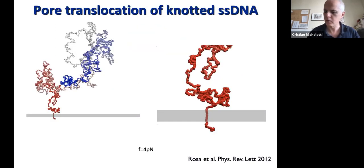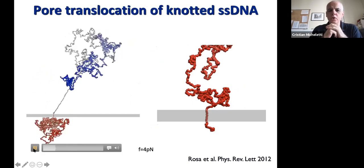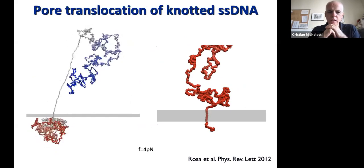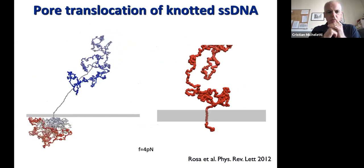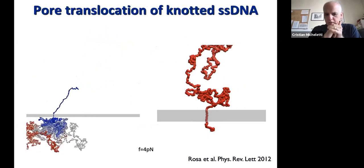What happens when you translocate the chain? You can try to take your bet. This is your knotted chain, and this is its translocation process. It goes through. No problem.